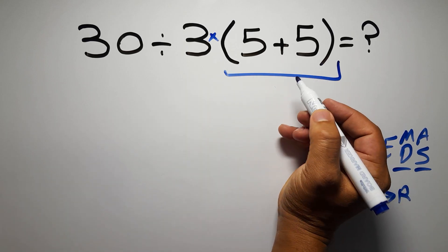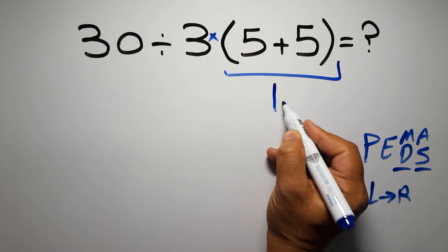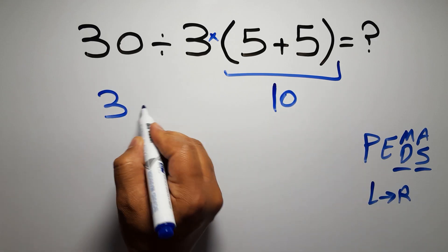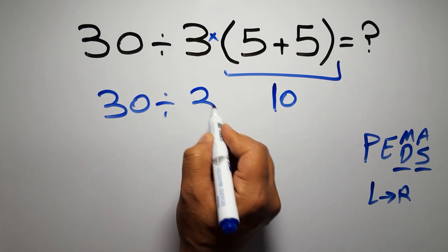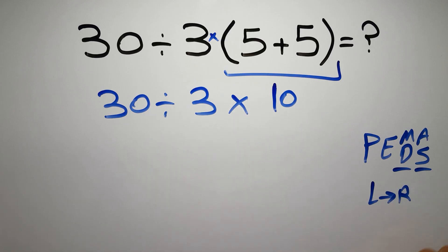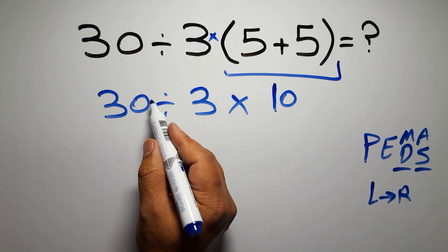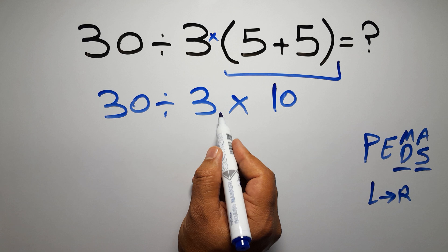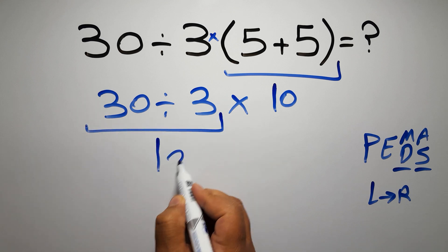First, this parentheses: 5 plus 5 gives us 10, so 30 divided by 3 times 10. Now we have one division and one multiplication. As I said, multiplication and division have equal priority and we have to work from left to right. So here, first we have to do this division: 30 divided by 3 is just 10, and 10...